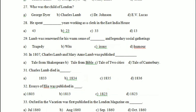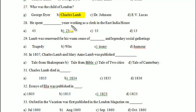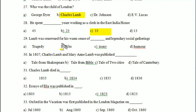Who was the 'child of London'? George Dyer, Charles Lamb, Dr. Johnson, or E.V. Lucas? Answer is Charles Lamb. Lamb spent how many years working as a clerk in the East India House — 43, 23, 33, or 13? Answer is 33.